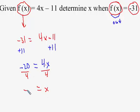Negative divided by positive is a negative, and 20 divided by 4 is 5. So I get that the x value of negative 5 would be the input so that the output f of x would be negative 31.